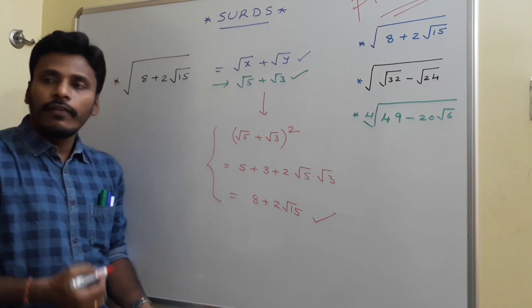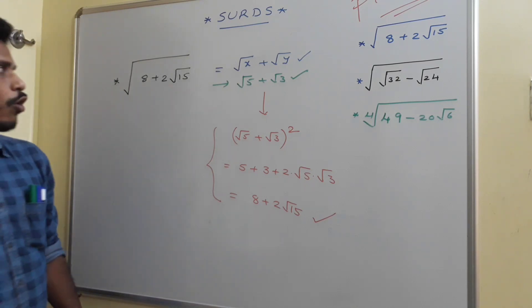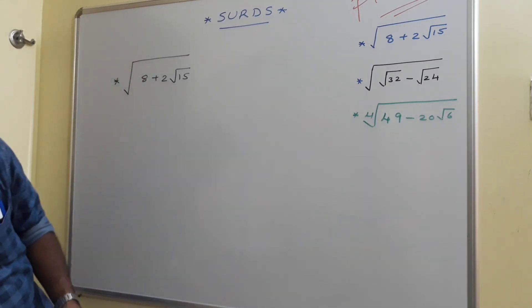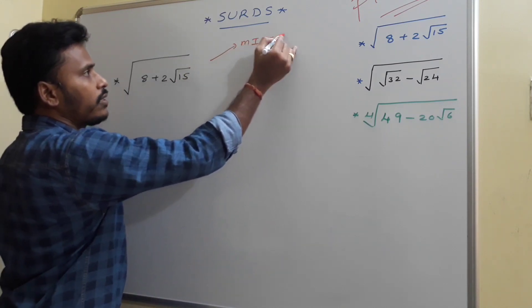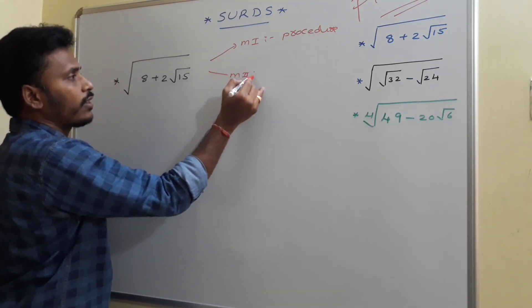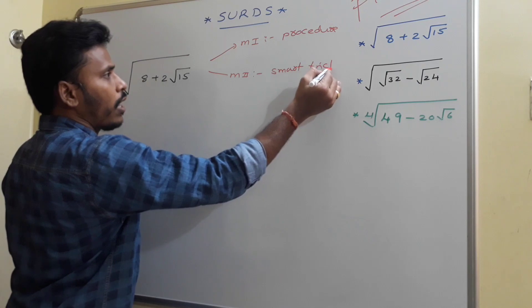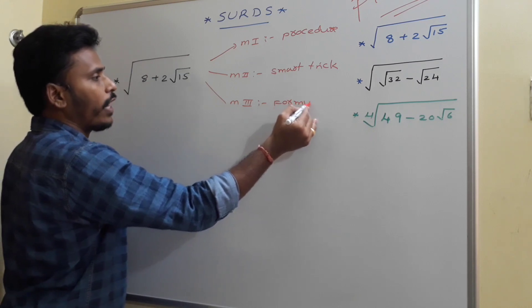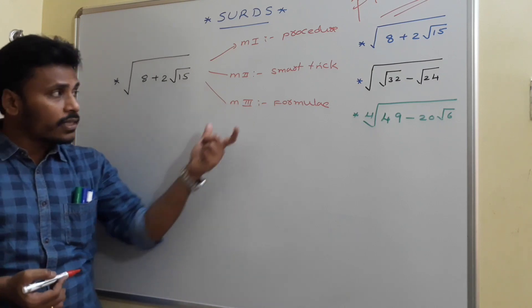This checking idea also generates a shortcut. There are three different methods to find the square root of 8 plus 2 root 15. Method 1 is the actual procedure we just discussed. Method 2 is a smart trick. Method 3 is the formula technique. We have different ways to find this square root.